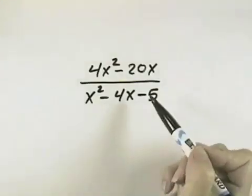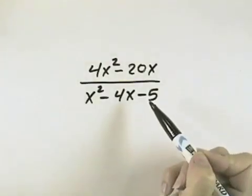In this problem, we want to simplify this rational expression. To do so, we can only cancel like factors.